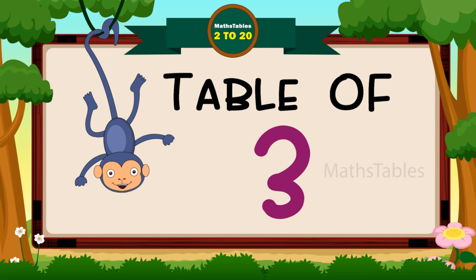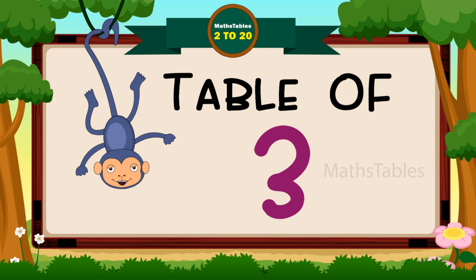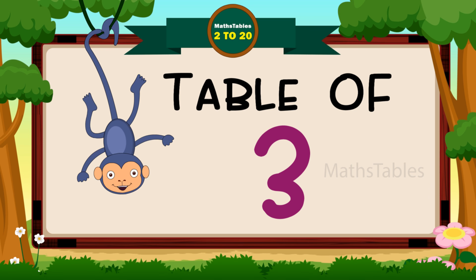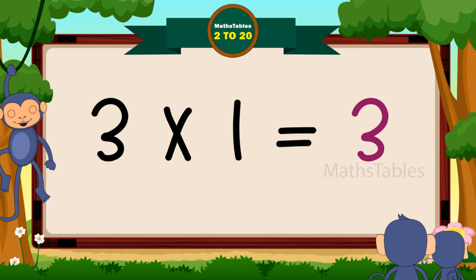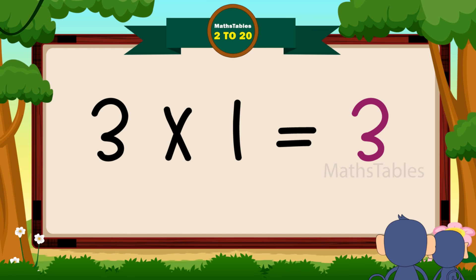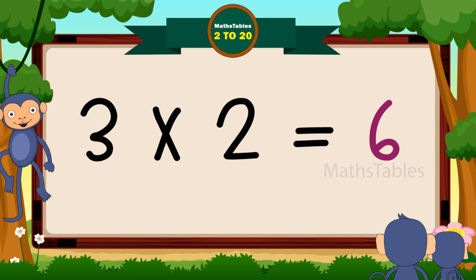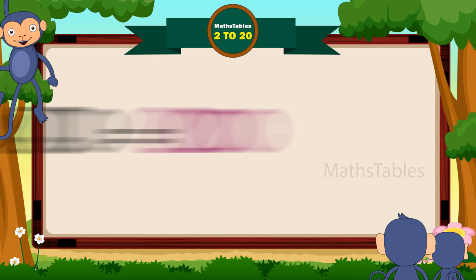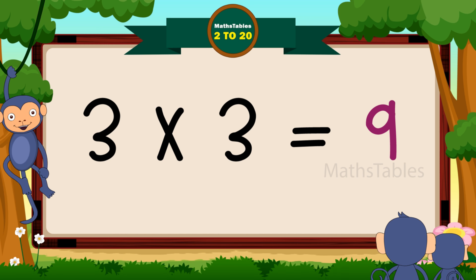Hi friends, now we will learn the table of three. Three ones are three. Three ones are three. Three twos are six. Three twos are six. Three threes are nine. Three fours are twelve.